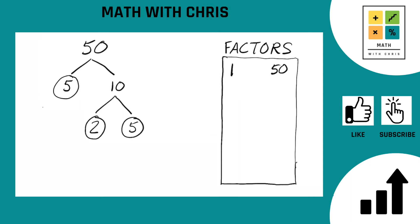We are already done. You can see all tree branches end in a circled prime number. We've got a 2, a 5, and another 5. That means 2 times 5 times 5 equals 50. Those are the prime factors of 50.